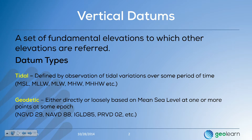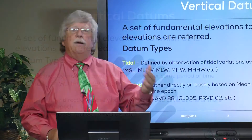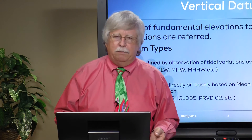There are really two fundamental types of vertical datums. A tidal datum, which collects information at the shoreline, at a tide gauge, looking at the variations in the tides over time, typically a 19-year cycle referred to as the Metonic cycle. And from that series of observations, you produce the various local tidal datums: mean low or low water, mean high water, or the one most commonly referenced, mean sea level.